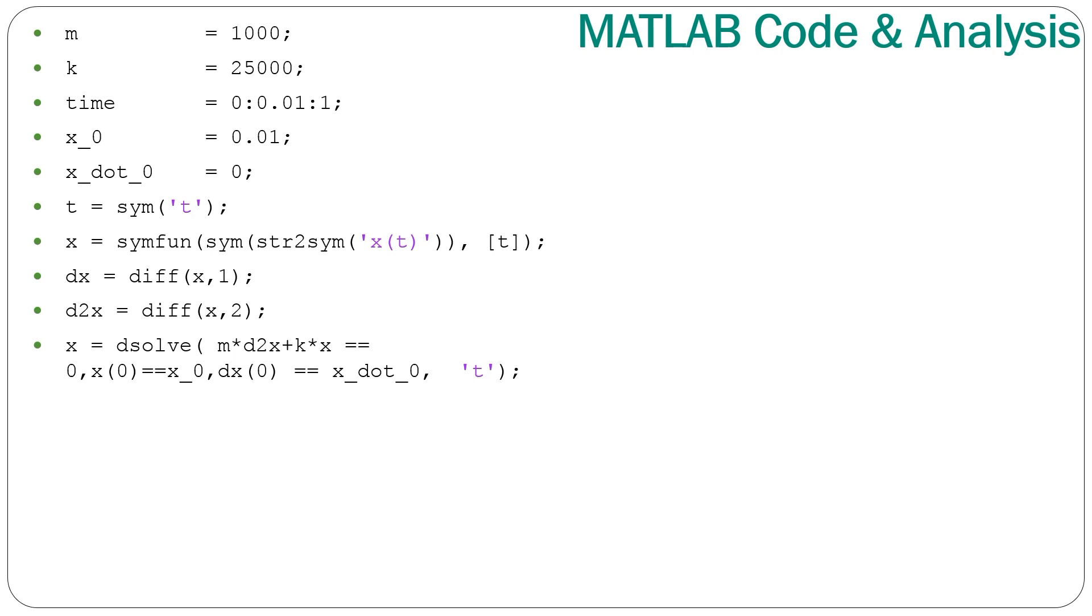And from here we can then start with a MATLAB file. We define mass of the body as m equals 750 kg, stiffness coefficient of spring k equals 50,000, time of zero to one second in increments of 10 ms. Initial condition displacement x_0 equals 0.01, initial condition velocity x_dot_0 equals zero, then we define symbolic time variable t and system function. We obtain first and second derivatives and store in dx and d2x. The important function dsolve solves the differential equation m d2x plus k times x equals zero given the initial conditions above.